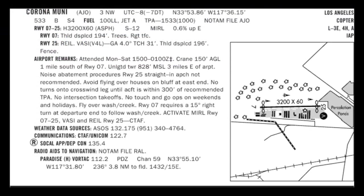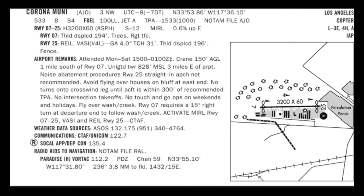First thing you look at is the runway length — it is 3,200 feet long. Is this long enough for a Cessna 172? Yes, it is. Then look at the airport elevation: 533 feet. Pretty close to sea level, so we're good. Next, look at the traffic pattern altitude. It is 1,533 feet MSL, or 1,000 feet above ground level.